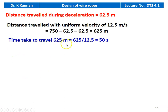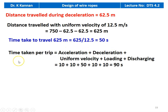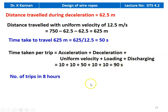Time taken to travel 625 meters at uniform velocity equals 625 divided by 12.5 equal to 50 seconds. Time taken per trip: acceleration 10 s, deceleration 10 s, uniform velocity 50 s, discharging 10 s, loading 10 s, total equals 90 seconds. In an 8-hour shift, number of trips equals 8 into 3600 divided by 90 equal to 320 trips.